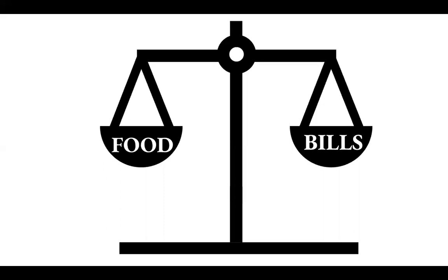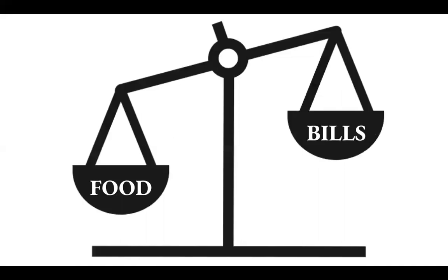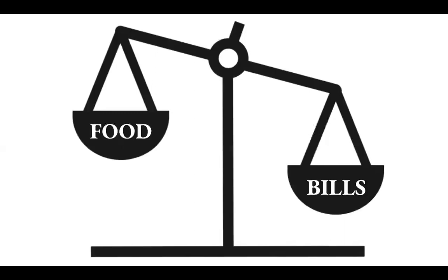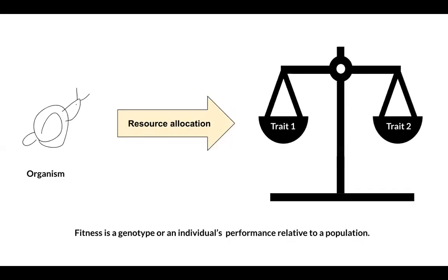Imagine you have to divide a hundred dollars between paying for food and bills. If you invest sixty dollars into paying bills, you have forty dollars left for food. How will you allocate your money? This analogy can explain resource allocation trade-offs.